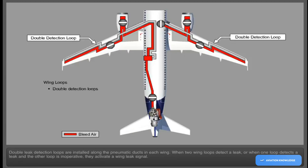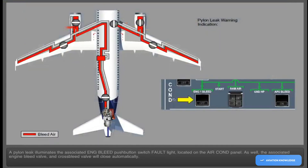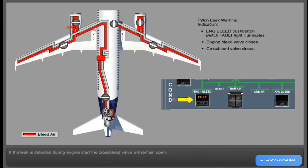When two wing loops detect a leak, or when one loop detects a leak and the other loop is inoperative, they activate a wing leak signal. A pylon leak illuminates the associated engine bleed push-button switch fault light located on the air conditioning panel. The associated engine bleed valve and cross bleed valve will close automatically.